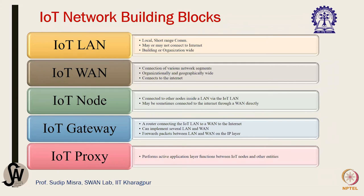Let us think about the building blocks for IoT. For the internet, we know there are different building blocks: nodes meaning network devices, gateways, proxies, and different types of networks like LAN, WAN, MAN, etc. Here in IoT, whether extending the existing internet or developing a separate internetwork from scratch, we need to have the IoT node, IoT gateway, IoT proxy, local area network, wide area network, and so on — very analogous to what we have in our internet counterpart.